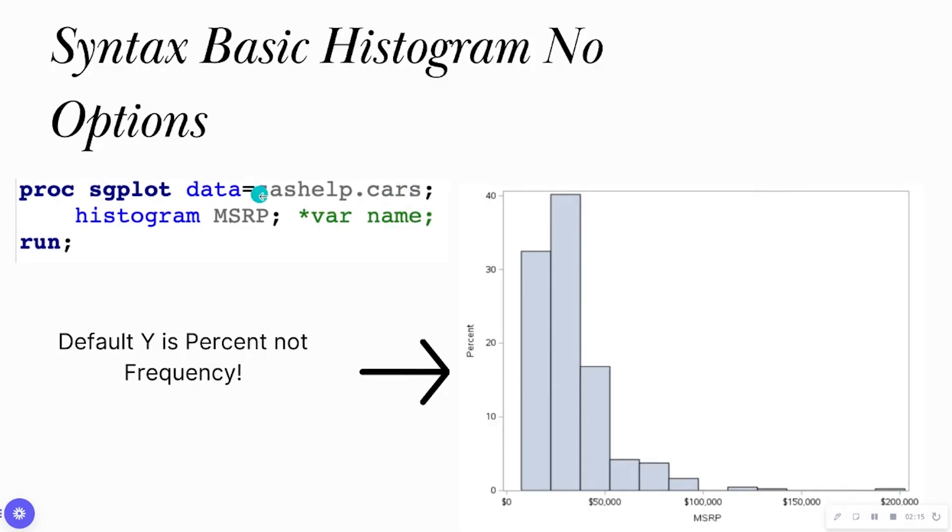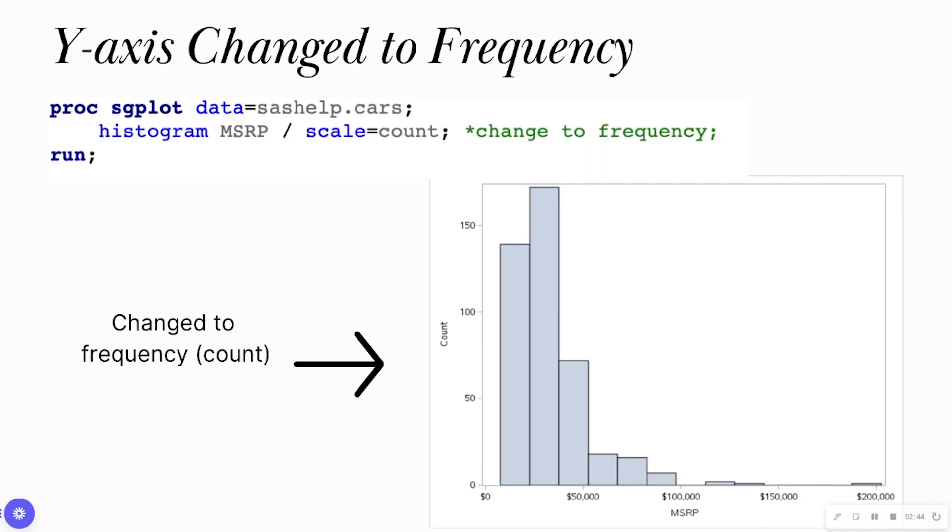Okay, so here is our basic histogram with no options. This was the example that I just showed on the previous slide. I'm looking at a histogram of the manufacturer's suggested retail price. Notice the default Y-axis is percent and not frequency. That is not really intuitive for histograms. Most of the time, you would want your Y-axis to be frequency and not percent. So I'm going to show you on the next slide how we can change that.